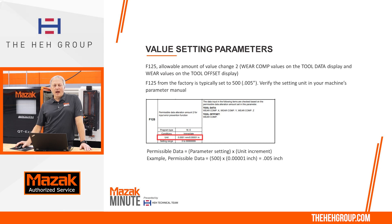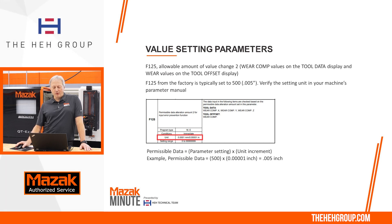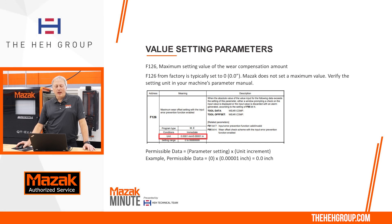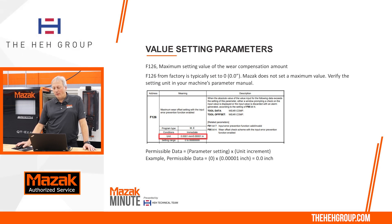Now let's look at F125, which Mazak calls value change 2. This monitors the wear comps on the tool data or the wear comps on the tool offset screen. Mazak typically sets this to 500, which is the equivalent of five thousandths. The F126 parameter is the maximum setting of the wear compensation amount, and the factory setting is zero.